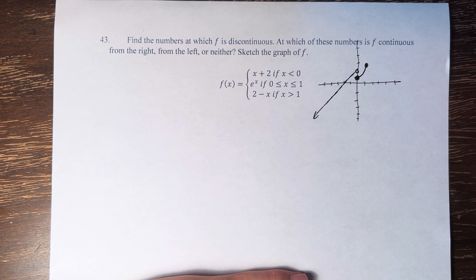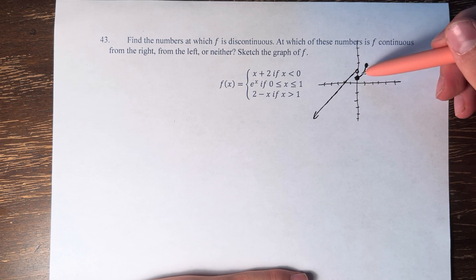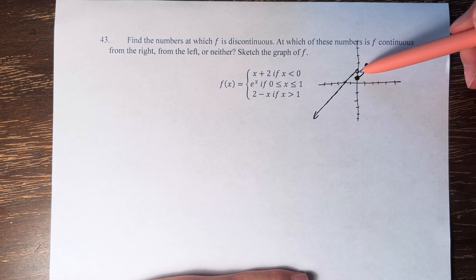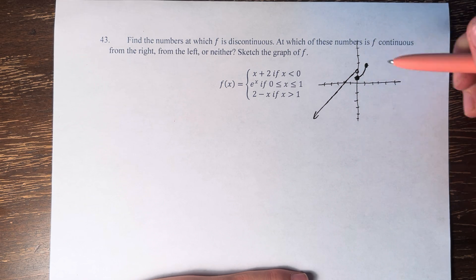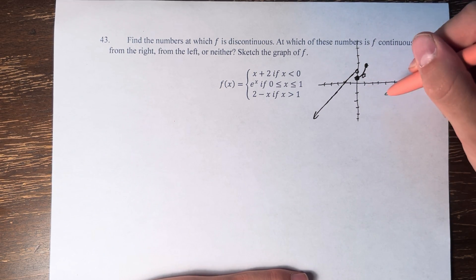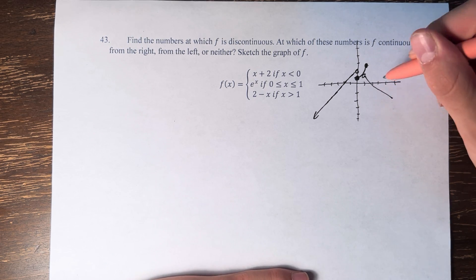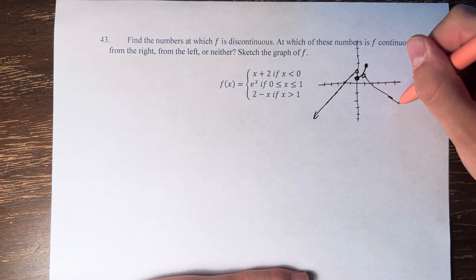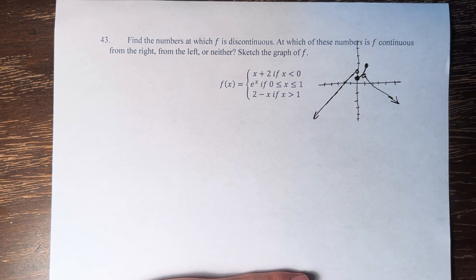And then 2 minus x if x is greater than 1, so we start at e, y-intercept of 2, to the right 1, down 1, sort of starting at this point right here. Again, open circle because it's actually equal to e at that point. And then it's going down like that. If I didn't misdraw the line, it's a little squiggly, but you get the point.